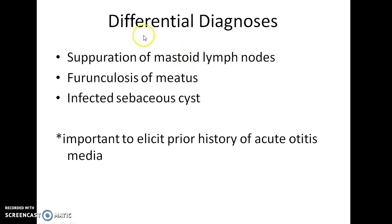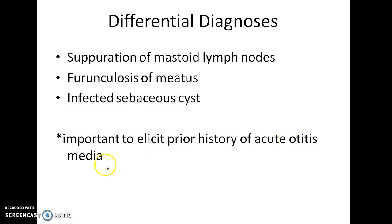The differential diagnoses of acute mastoiditis include suppuration of mastoid lymph nodes, furunculosis of the meatus, and infected sebaceous cysts. It is important to elicit a prior history of acute otitis media to diagnose acute mastoiditis — if there is a prior history of acute otitis media, it most often points to acute mastoiditis.